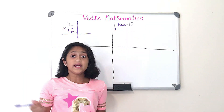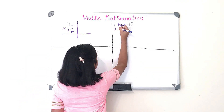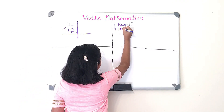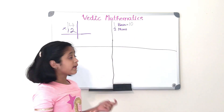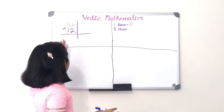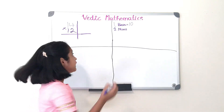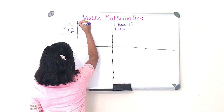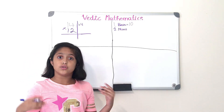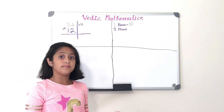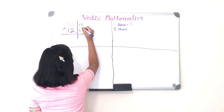Step two is we have to subtract. We subtract 14 minus 10, which equals plus 4. We also do 12 minus 10, which equals plus 2.